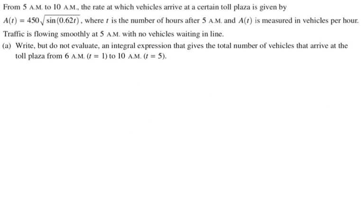From 5 AM to 10 AM, the rate at which vehicles arrive at a certain toll plaza is given by A(t), which is 450 root sine of 0.62t, where t is the number of hours after 5 AM, and A(t) is measured in vehicles per hour. Traffic is flowing smoothly at 5 AM with no vehicles waiting in line.